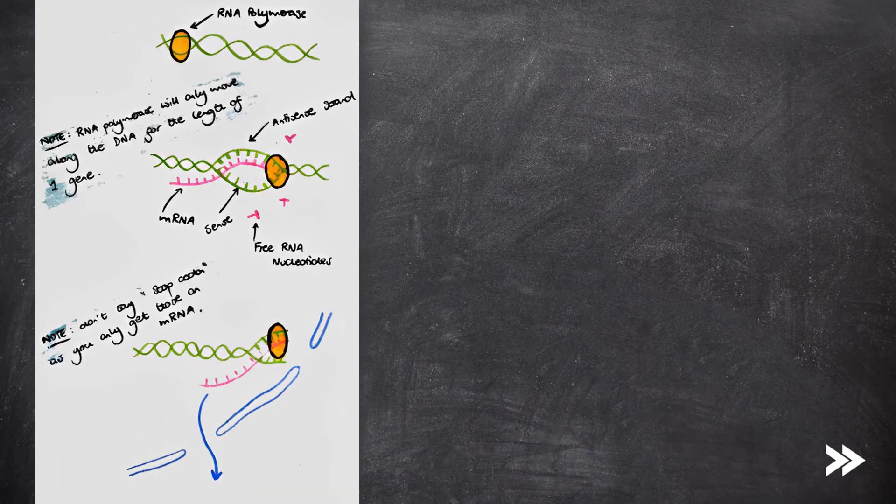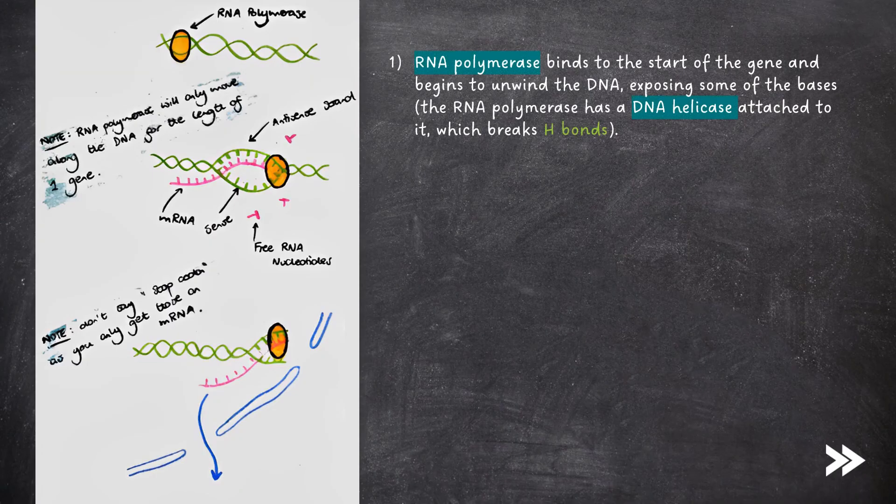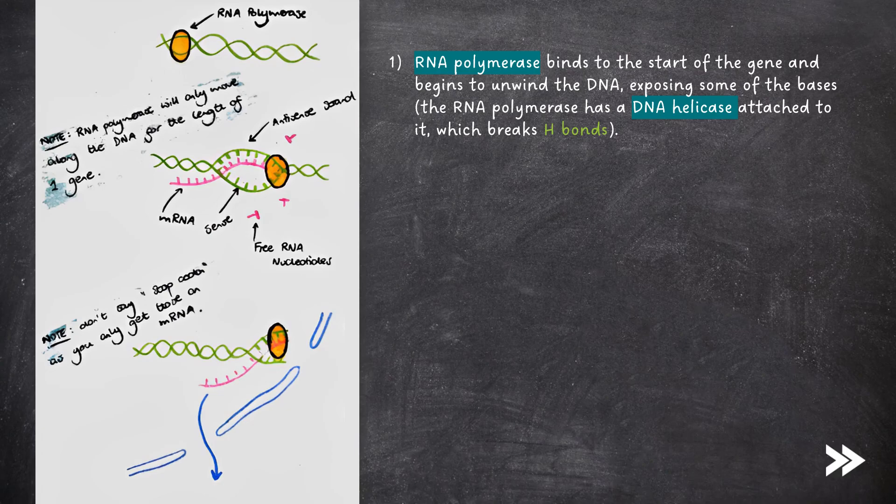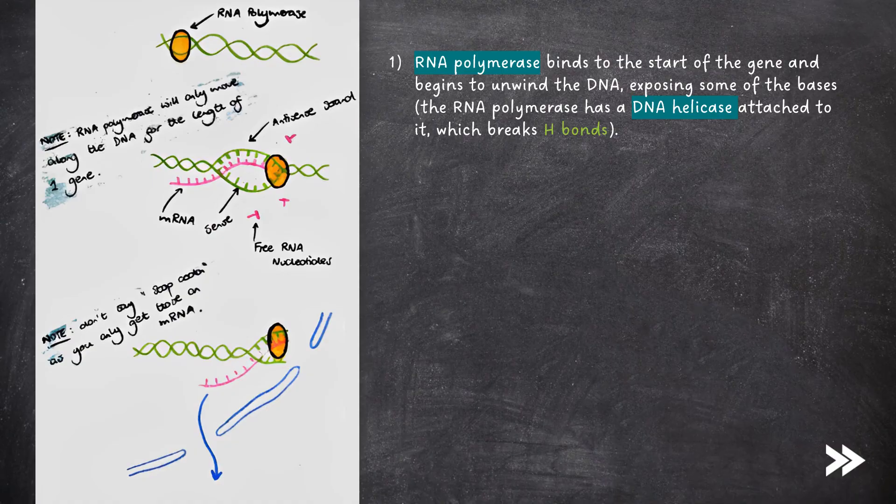In transcription, first the enzyme RNA polymerase binds to the start of a gene and begins to unwind the DNA, exposing some of the bases. This works because the RNA polymerase has a DNA helicase enzyme attached to it, which breaks hydrogen bonds between specific complementary base pairs.